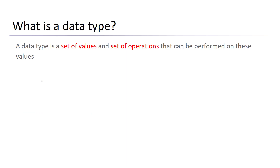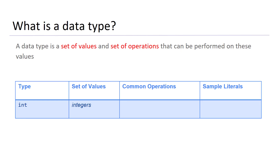So what is a data type? A data type is a set of values and a set of operations that can be performed on these values. Consider for example the integer data type. An integer, as you know, is basically a whole number — a number that does not have any fractions or a decimal point.